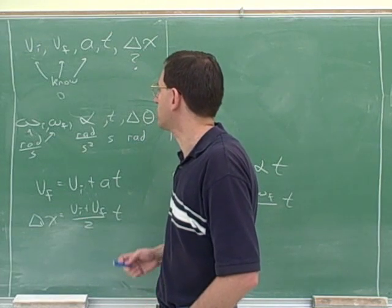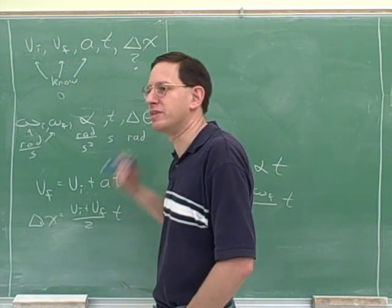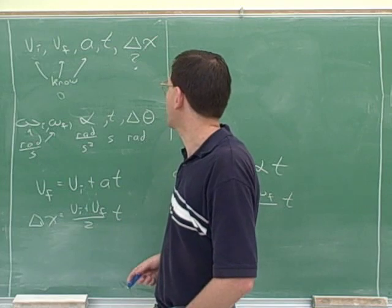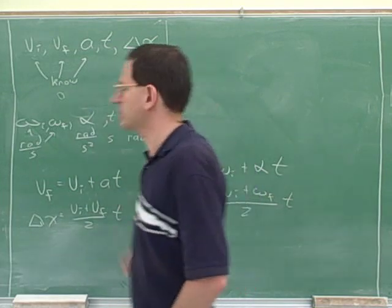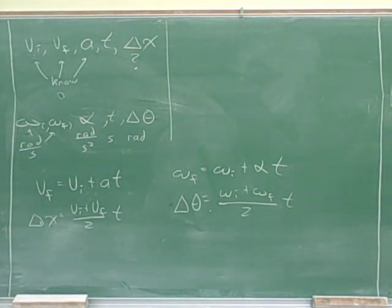So if you look at the handout for each equation, I've also listed which variable it's missing. So let's practice that real quickly. Which equation would we use in this situation? Which is the equation that's missing time for the linear equations? Yeah, the final squared equals the initial squared plus 2a delta x.